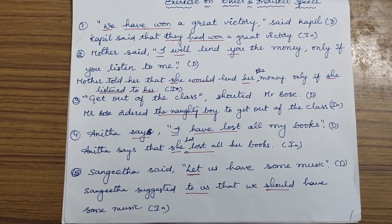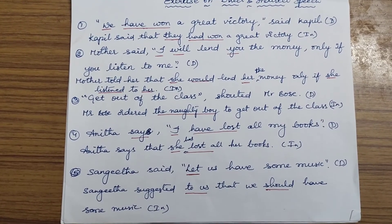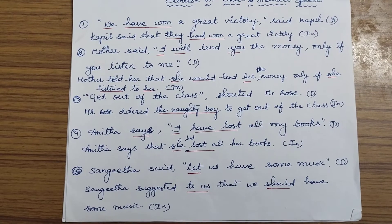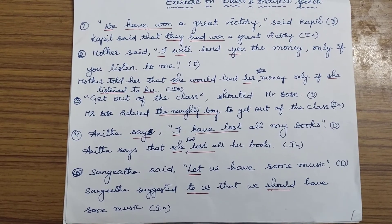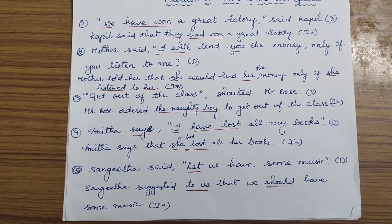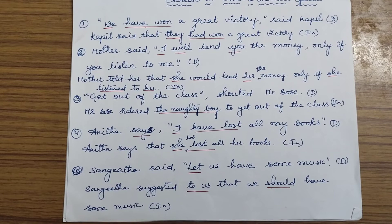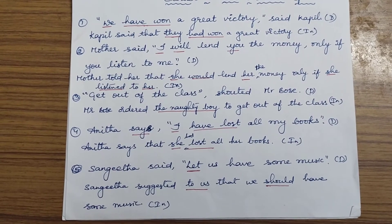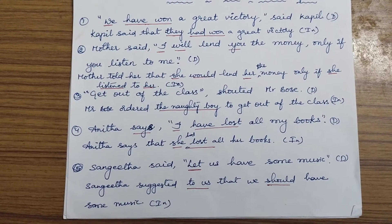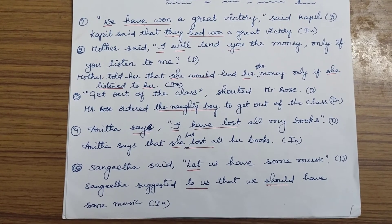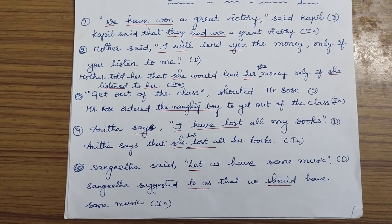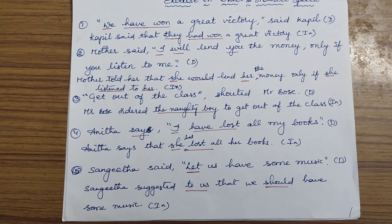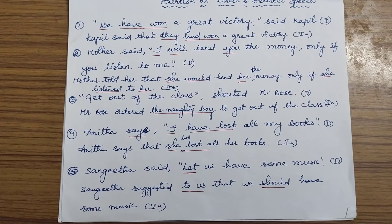Fifth one: Sangeeta said, 'Let us have some music.' 'Let us' is a suggestion, so we use the reporting verb 'suggested.' Sangeeta suggested to us that we should have some music. When the object is not given, you can use 'to us' depending on the situation. Taking 'us' as the object, we get 'we,' giving us: 'Sangeeta suggested to us that we should have some music.'